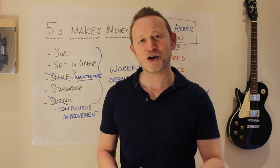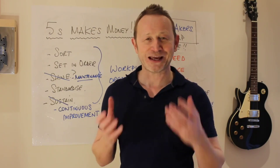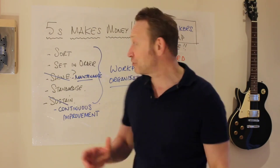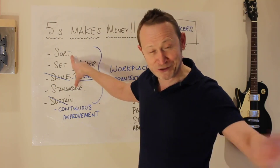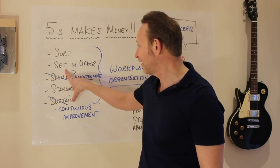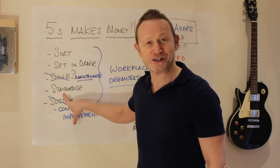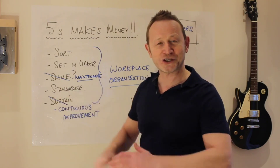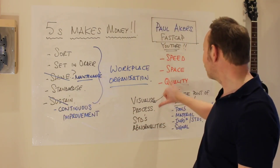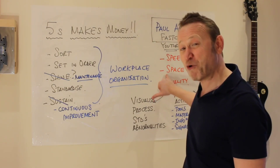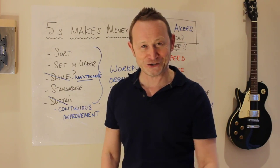Finally, just to make the point that 5S makes money and is definitely not about housekeeping, let me show you the example Paul gives about the design of an airline ticket. When you see this, you'll see them sort — get rid of the crap off the airline ticket — set in order, and standardize it. It gets rid of all the clutter and suddenly you get quality. Let me show you Paul and his airline ticket.